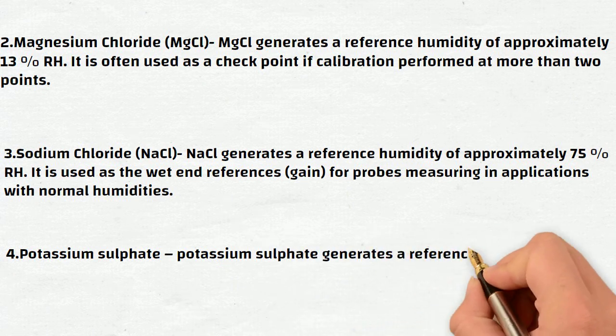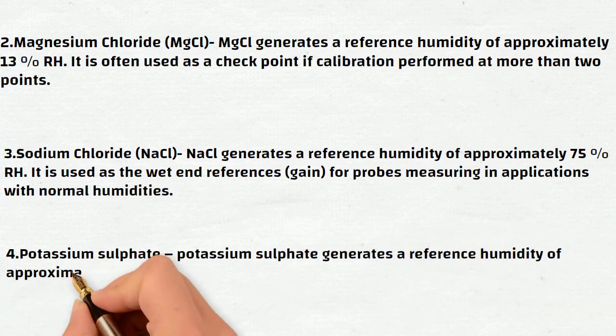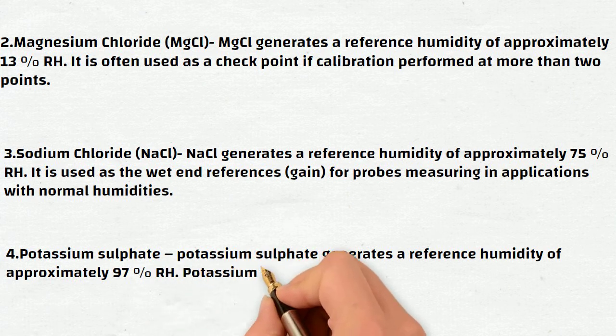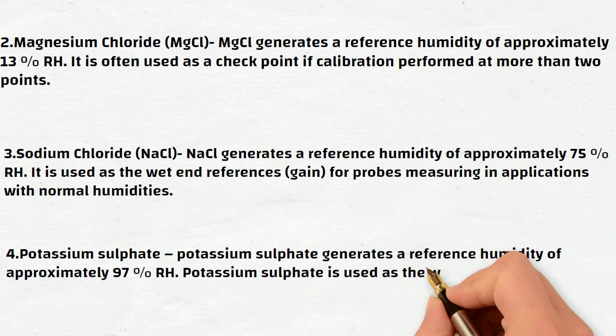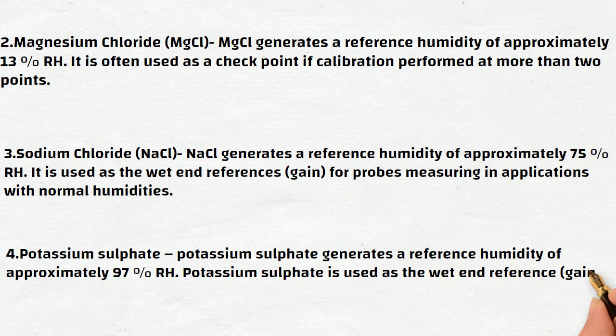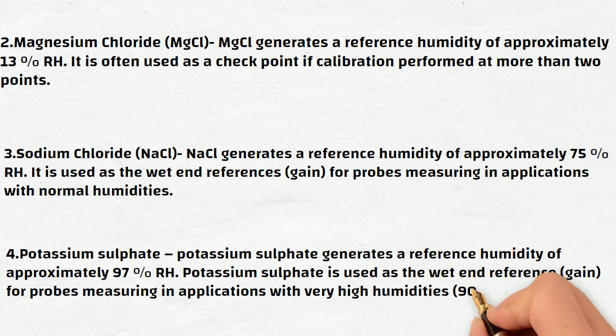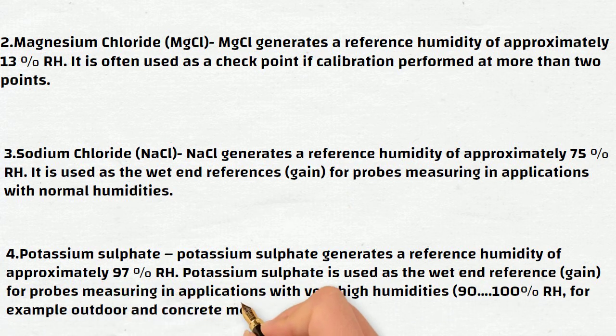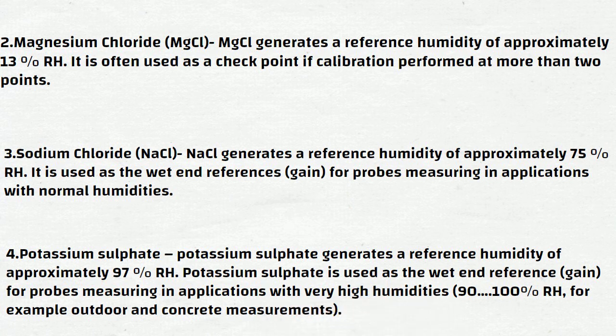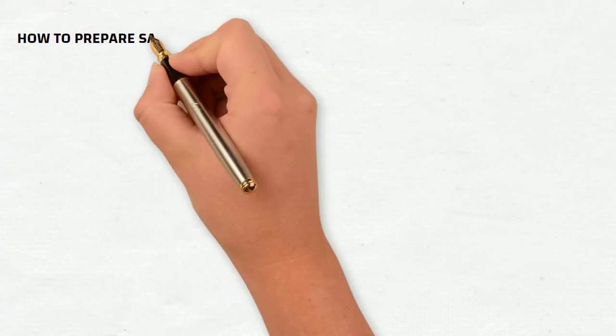a reference humidity of approximately 97% RH. Potassium sulphate is used as a wet end reference for probes measuring in applications with very high humidities, typically 90 to 100% RH, for example outdoor and concrete measurements.